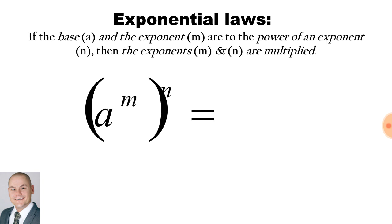We have brackets with a base of a to the exponent of m, and outside of the brackets we have an exponent of n. If the base a and exponent m are to the power of an exponent n, then the exponents m and n are multiplied.